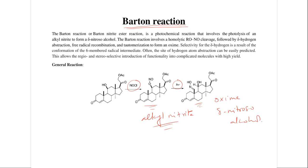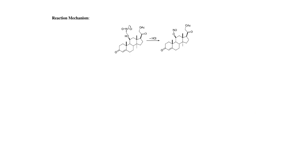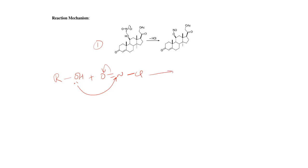How does this reaction take place? Let's look at the reaction mechanism. In the first step, alcohol reacts with nitrosyl chloride. Let's take a general alcohol which reacts with nitrosyl chloride. The alcohol oxygen lone pair of electrons attacks on the nitrogen of nitrosyl chloride, and the pi bond breaks towards the oxygen atom.